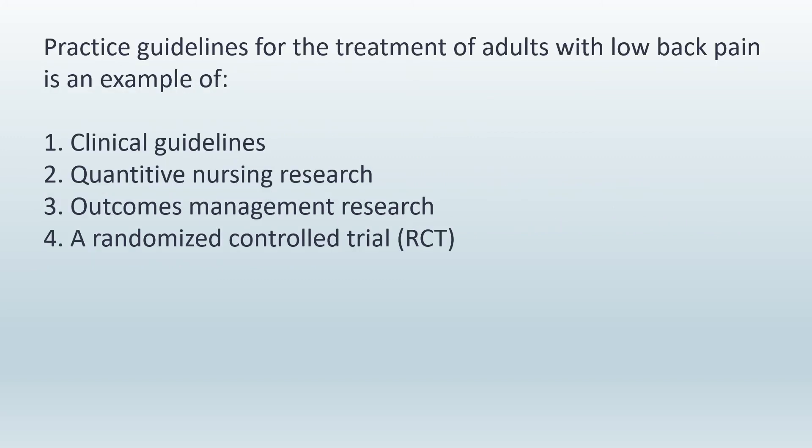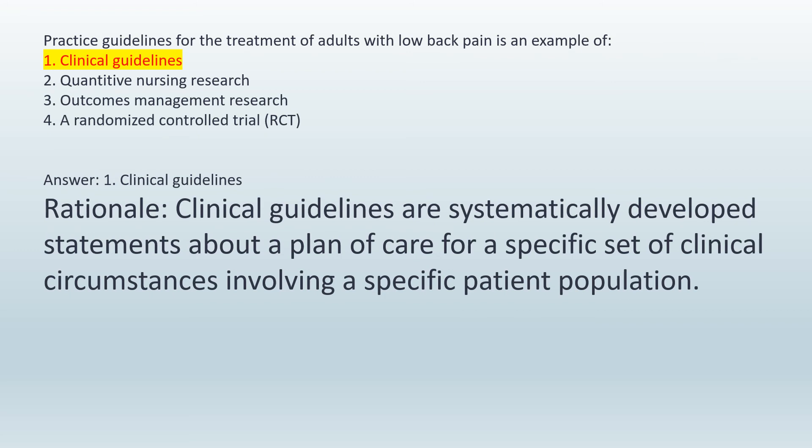Practice guidelines for the treatment of adults with low back pain is an example of: 1. Clinical guidelines. 2. Quantitative nursing research. 3. Outcomes management research. 4. A randomized controlled trial (RCT). Answer: 1. Clinical guidelines. Rationale: Clinical guidelines are systematically developed statements about a plan of care for a specific set of clinical circumstances involving a specific patient population.